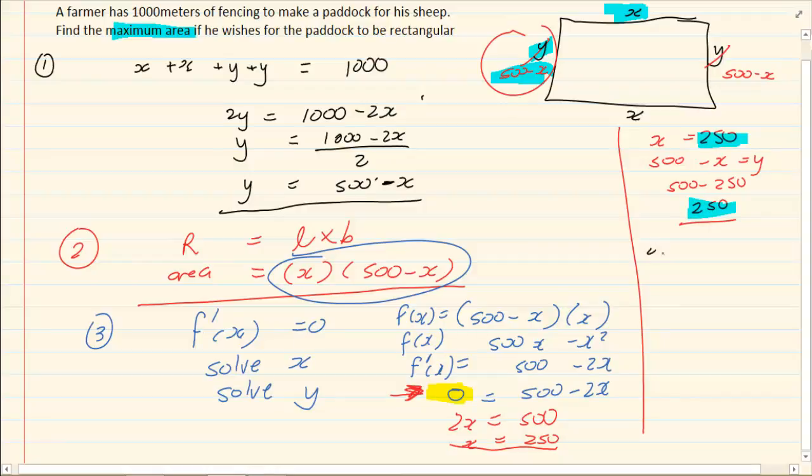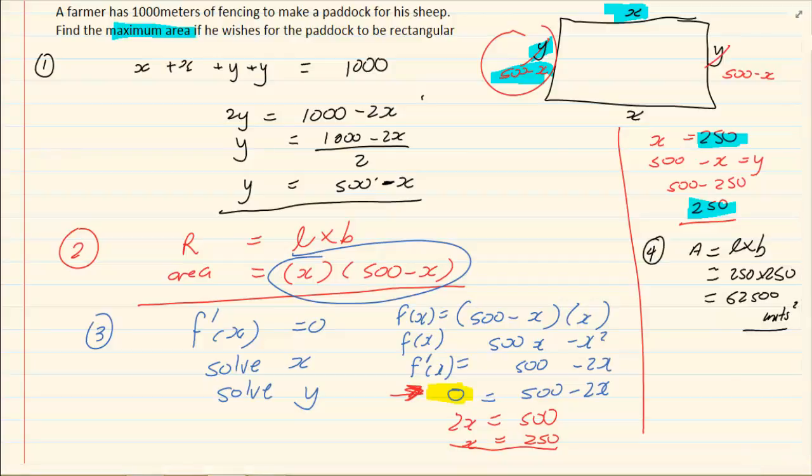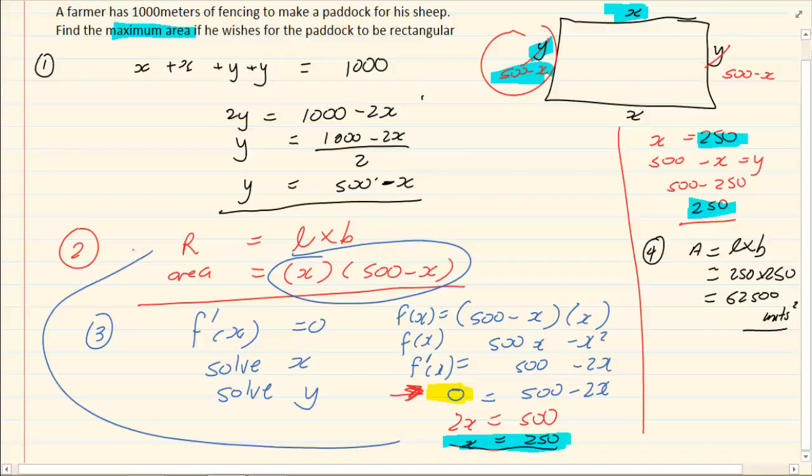After this, they'd like to ask you questions like, so what is the maximum area that he can get? Now, you know the area is equal to length times breadth. So, it's equal to 250 times 250, which is 62,500 units squared. But look at the question. What did we do? We did derivative. We solve for x. And then, we substituted x. We substituted x into the original. If they ask you, what is the maximum? You substitute x into the original.